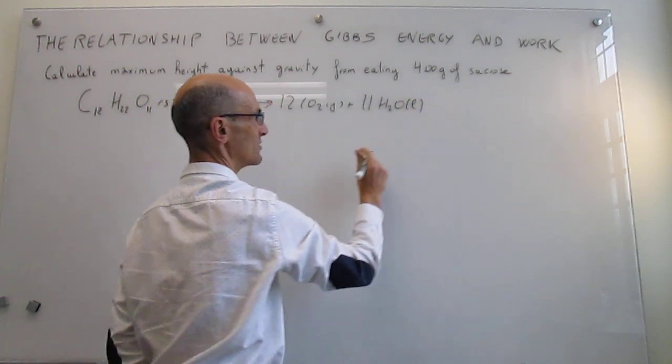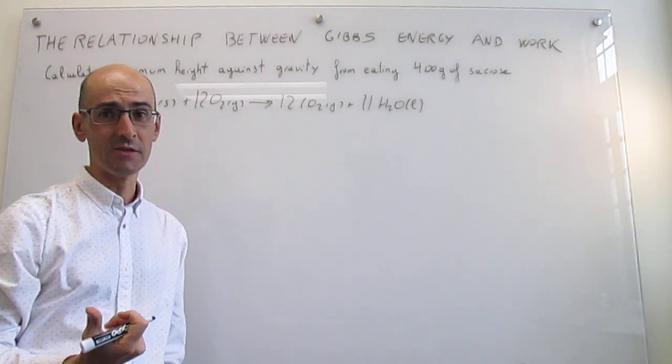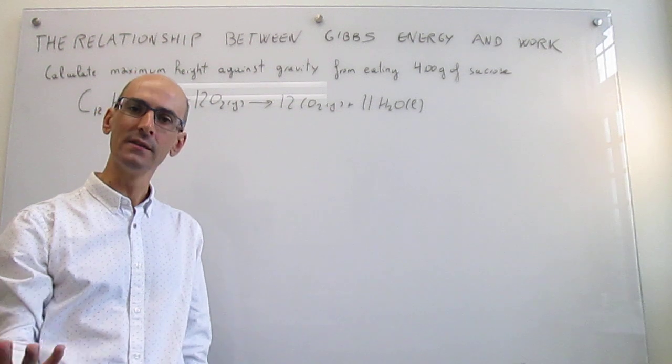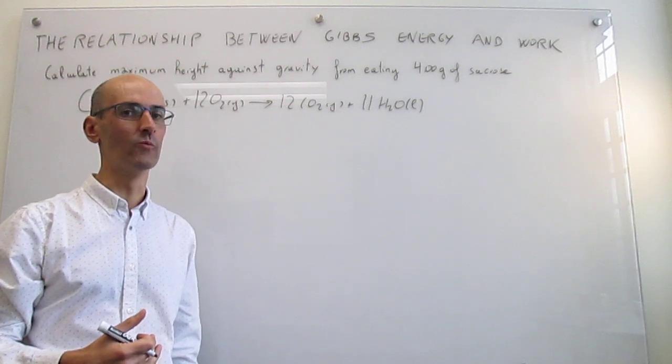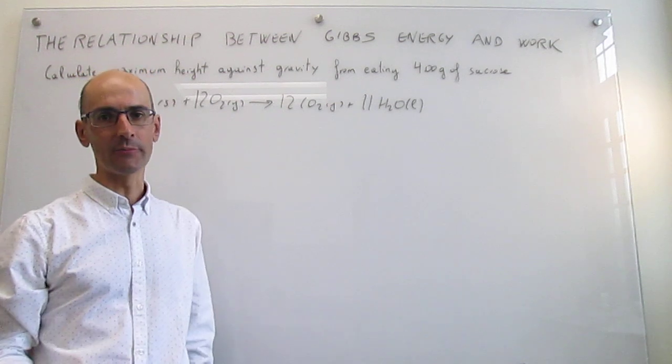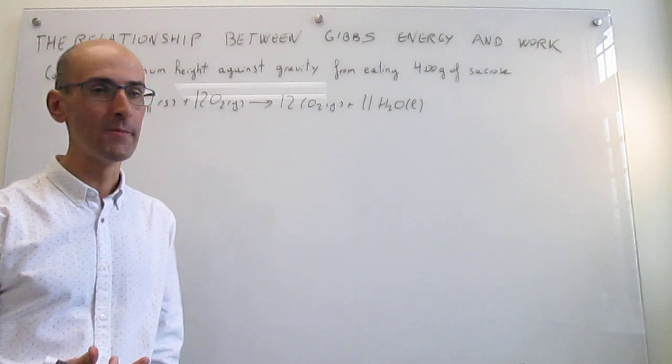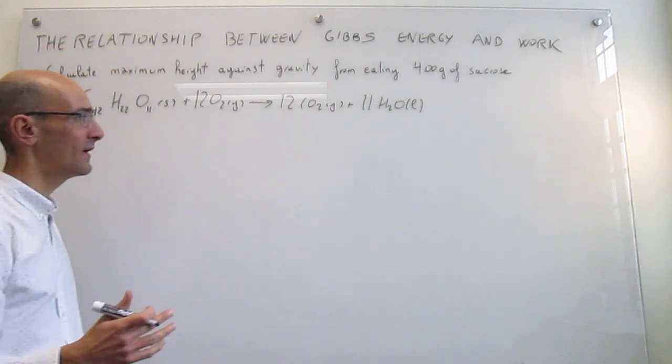There are going to be a couple of approximations in our calculations. We're going to assume that our body is working at 298 Kelvin, which is a little bit lower than where it normally works at 310 Kelvin, and the second approximation is that the pressures are going to be at one bar.